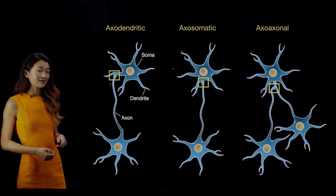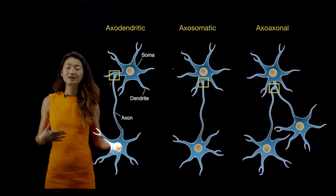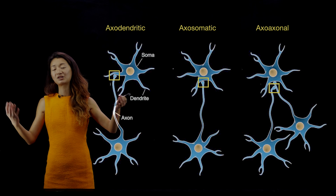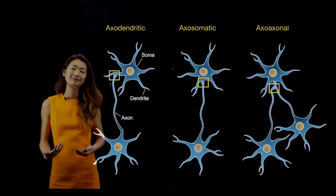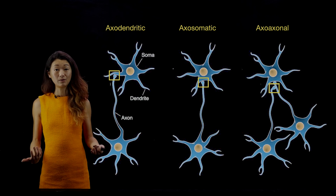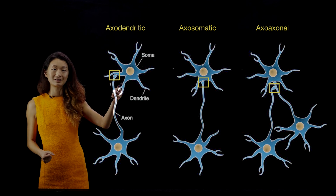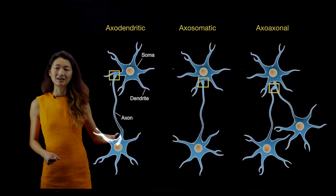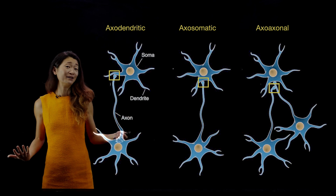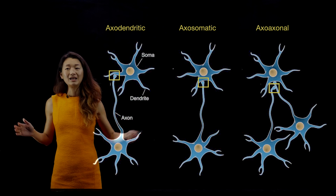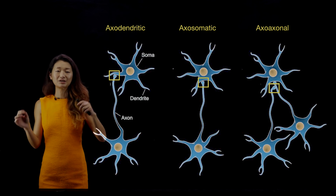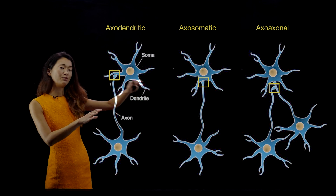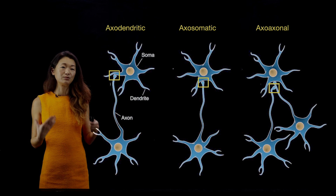Generically speaking, axons terminate at dendrites, which receive inputs, sum all that information, and pass it to the axon hillock to initiate another action potential. But the axon-to-dendrite synapse is not the only way you can make a synapse. That is called an axodendritic synapse. You can also have an axosomatic synapse where the axon synapses directly onto the soma, or even an axo-axonal synapse onto another cell's axon. All of these configurations are possible depending on the computation you want to happen.